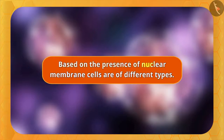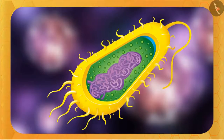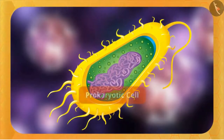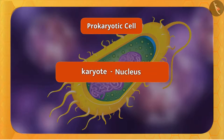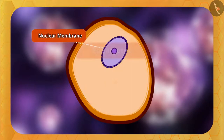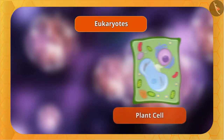Based on the presence of the nuclear membrane, cells are of different types. In some organisms like bacteria, the nuclear region is poorly defined due to the absence of a nuclear membrane — such an undefined nuclear region containing only chromatin is called a nucleoid. Organisms whose cells lack a nuclear membrane are called prokaryotes, and their cells are called prokaryotic cells. 'Pro' means primitive or primary and 'karyote' means nucleus. In these cells, many cell organelles are absent. Organisms with cells having a nuclear membrane are called eukaryotes, and they contain all the cell organelles — examples include plant and animal cells.